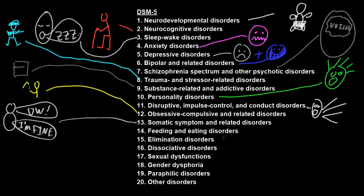Feeding and eating disorders involve distress or disability from mental or behavioral abnormalities related to food. Disorders in this category include anorexia nervosa, where a person takes in an insufficient amount of food, turning down food even though they are well below their healthy body weight. Another common disorder in this category is bulimia nervosa, which involves binge eating and purging.